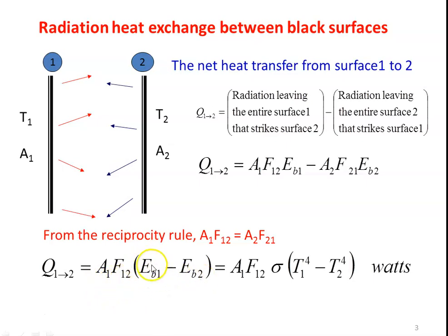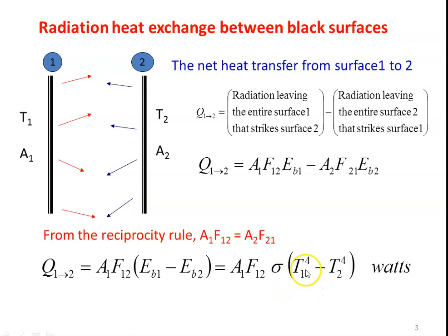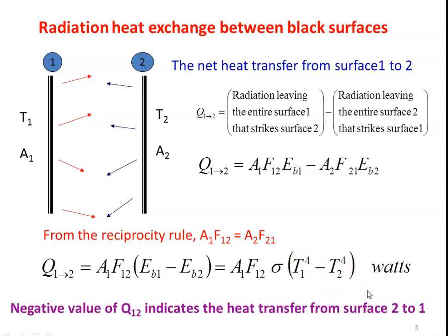Since both surfaces are black, the black body emissive power is σT⁴. So the heat transfer from surface 1 to 2 is Q = A1·F12·σ·(T1⁴ − T2⁴) in watts. If a negative value is obtained, that means heat is transferred from surface 2 to surface 1. This is the equation for black surface radiation heat transfer.